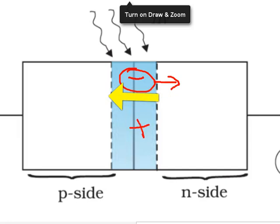And any hole here will experience a force in the direction of the electric field. When light falls, electron-hole pairs are created and they move as shown earlier.